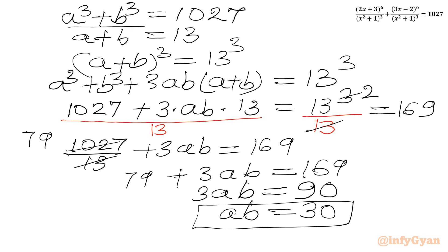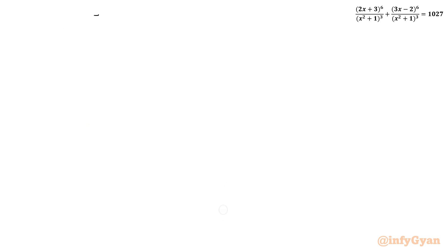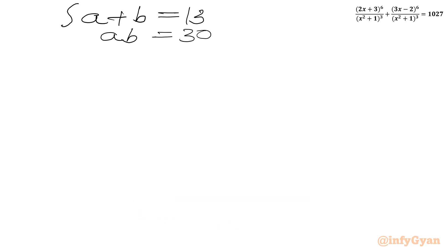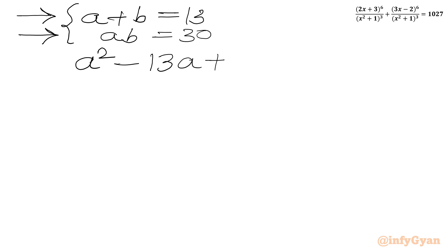Now we have two equations: a + b = 13 and ab = 30. We can think about one quadratic equation whose roots are a and b. The sum of roots is 13 and the product of roots is 30. So the quadratic in a is: a² - 13a + 30 = 0.